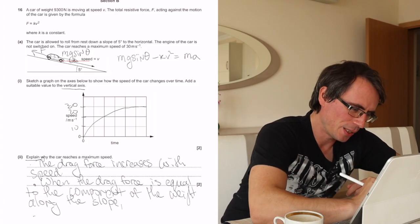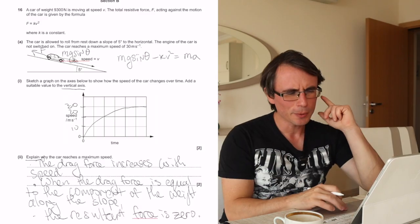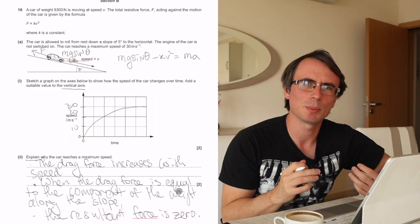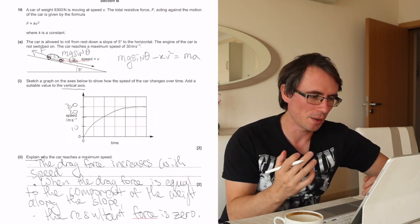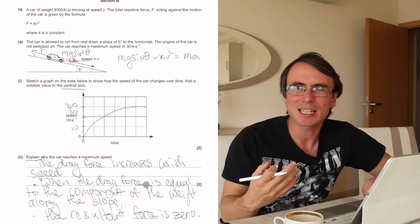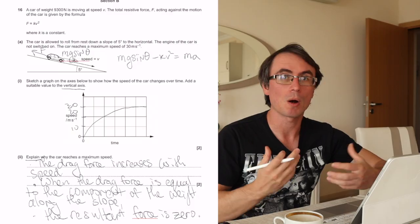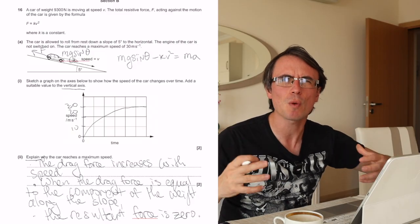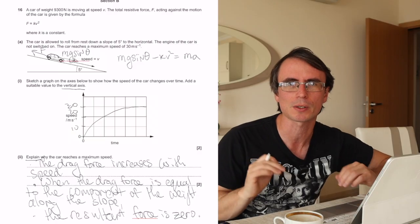When this happens, the resultant force is actually zero. Notice it's two marks, but I've included a little bit more. This is because I really want to maximize my chances of getting 100%. By writing a tiny bit more, as long as you're writing correct physics, you are maximizing your chances, and you want to make it really hard for your work not to be given full marks.